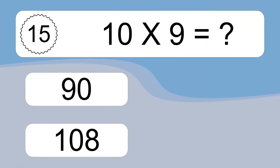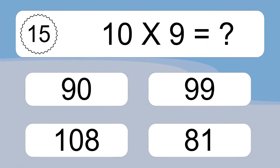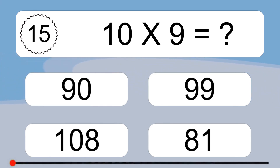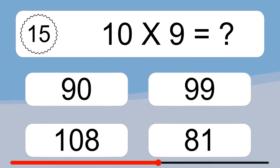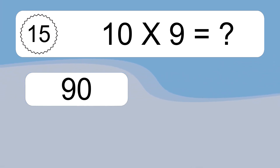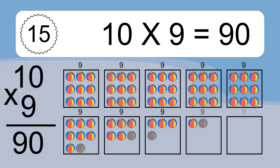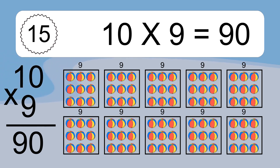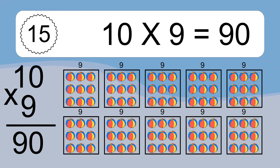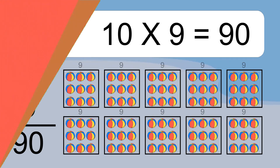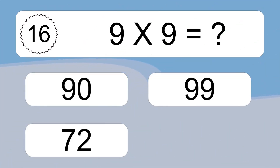10 times 9 equals what? We have 10 boxes, and each box has 9 colorful balls inside. If you count all the balls in all the boxes together, you will have 10 times 9 balls. This equals 90 balls.